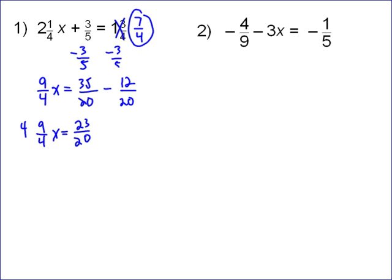Multiply by the reciprocal, 4 over 9. We multiply by the reciprocal so that this becomes 1 x. 4 over 9 times 9 over 4 is 1. That's the property of reciprocals.